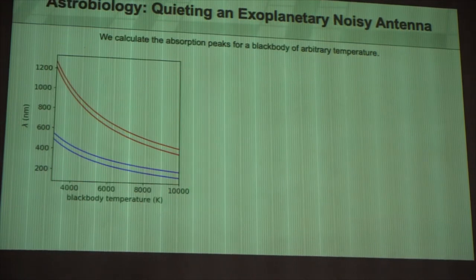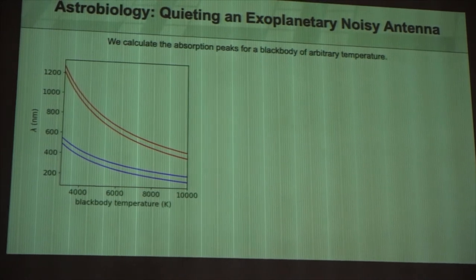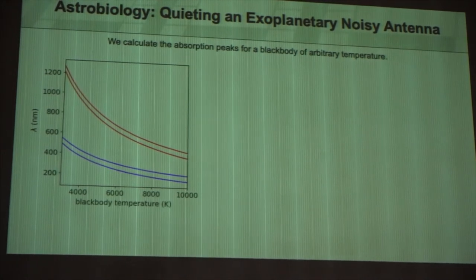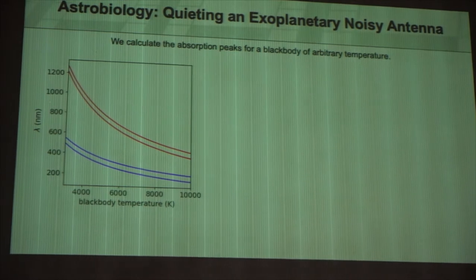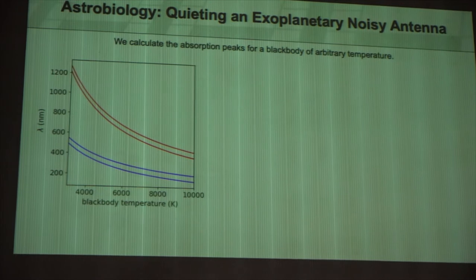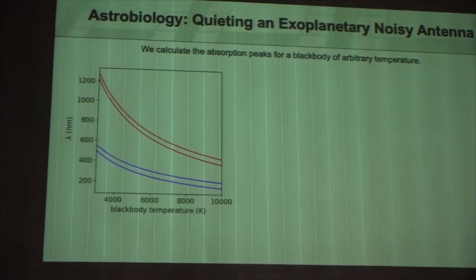And so we kind of pushed forward with this, and we said, can we understand more about all of the possible planets and their temperatures of their neighboring stars? And so we came up with this plot where what I plot here is the wavelength of these absorbers on the left, and then the temperature, the ideal kind of black-body temperature of that star.